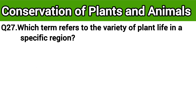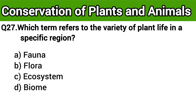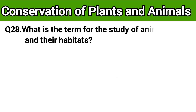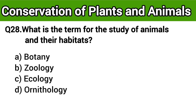Question number 27: Which term refers to the variety of plant life in a specific region? The right answer is option B: flora. Question number 28: What is the term for the study of animals and their habitats? The right answer is option B: zoology.